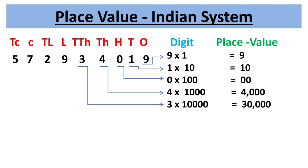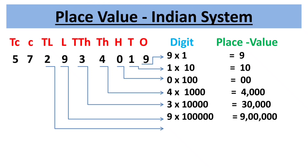The third period is lakhs, consisting of two place values: lakhs and ten-lakhs. Place value of 9 is 9 × 1,00,000 = 9 lakhs. Place value of 2 is 2 × 10,00,000 = 20 lakhs.